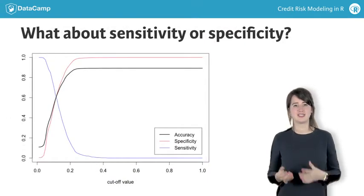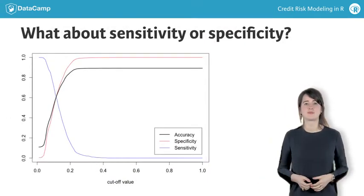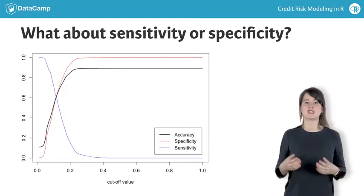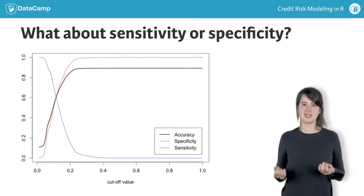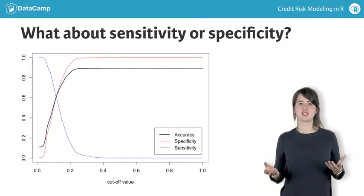Now, let's have a look at sensitivity and specificity. Unlike accuracy, the strictly increasing nature for specificity and strictly decreasing nature for sensitivity apply in general.